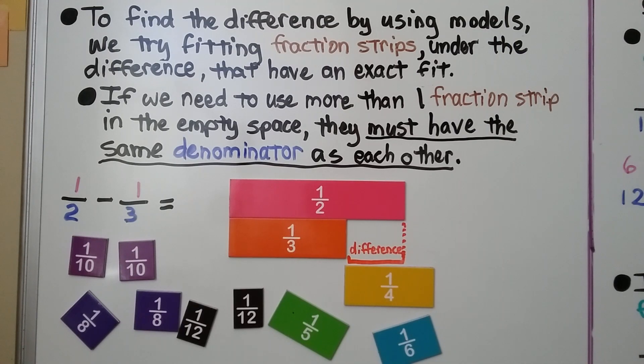To find the difference by using models, we try fitting fraction strips under the difference that have an exact fit. If we need to use more than one fraction strip in the empty space, they must have the same denominator as each other. We can see the one-fourth is too big. It doesn't fit.